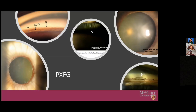To end the pseudoexfoliation section with a recap of key images: on the left, dandruff-like material around the pupil margin; fibrillar material on the zonules; the bullseye sign; and on gonioscopy you can see the typical landmarks — ciliary body band, scleral spur, trabecular meshwork, and Schwalbe's line — plus the extra Sampaolesi line seen in pseudoexfoliation glaucoma.